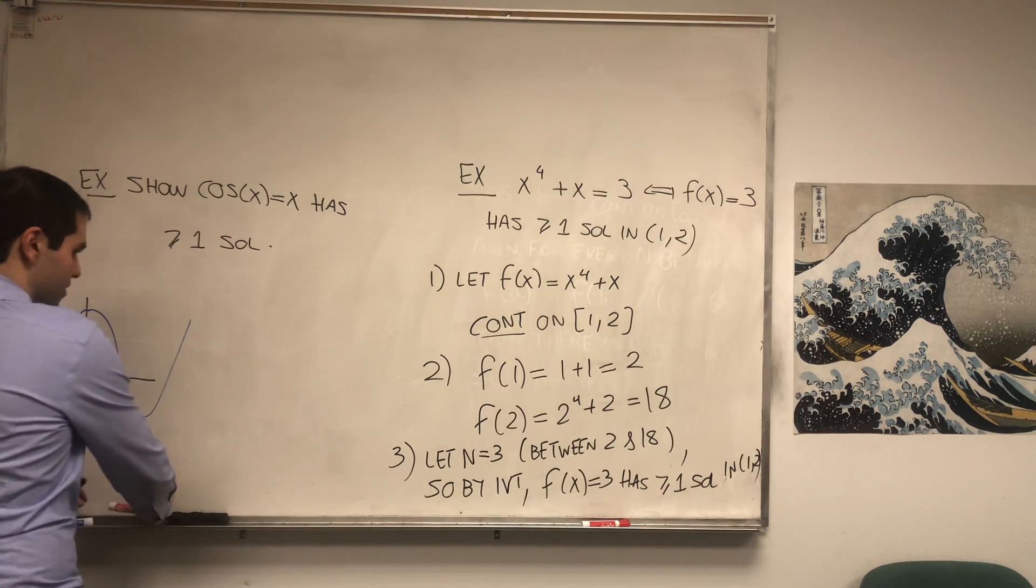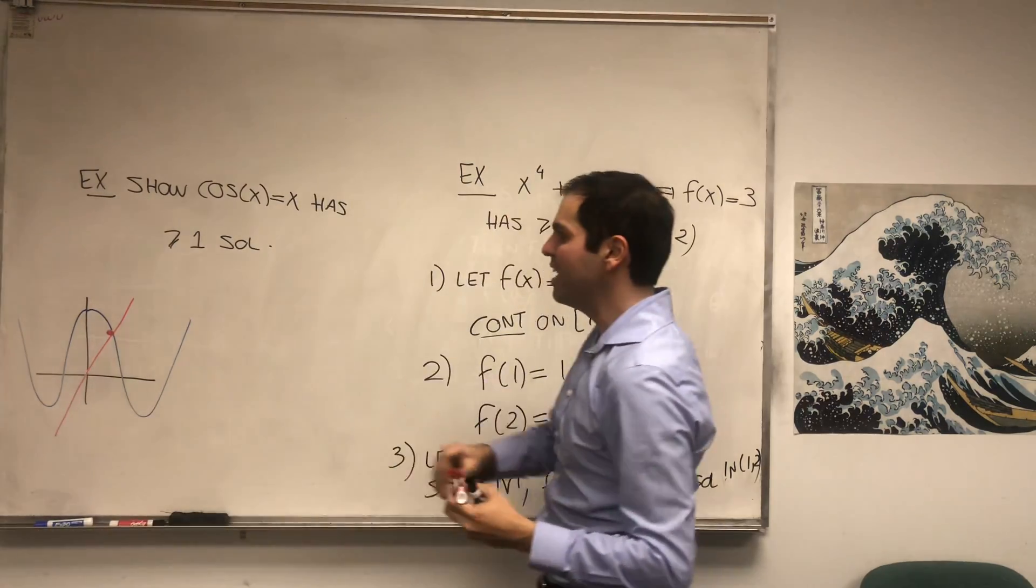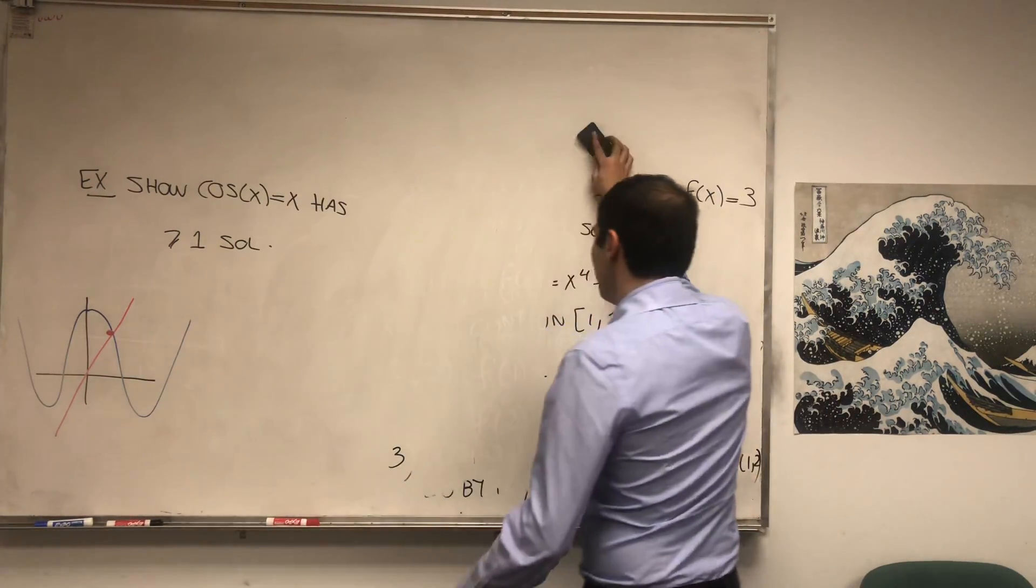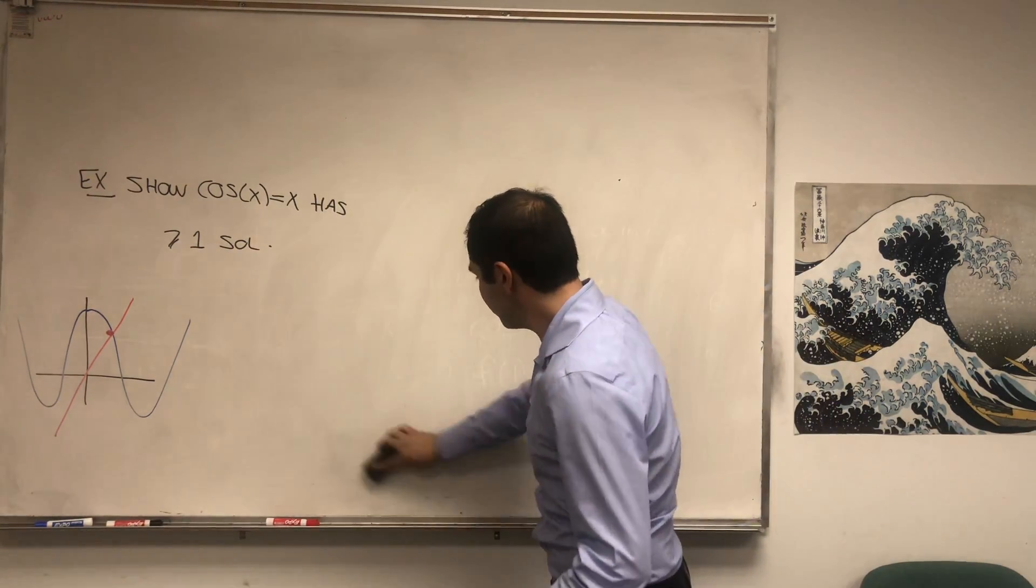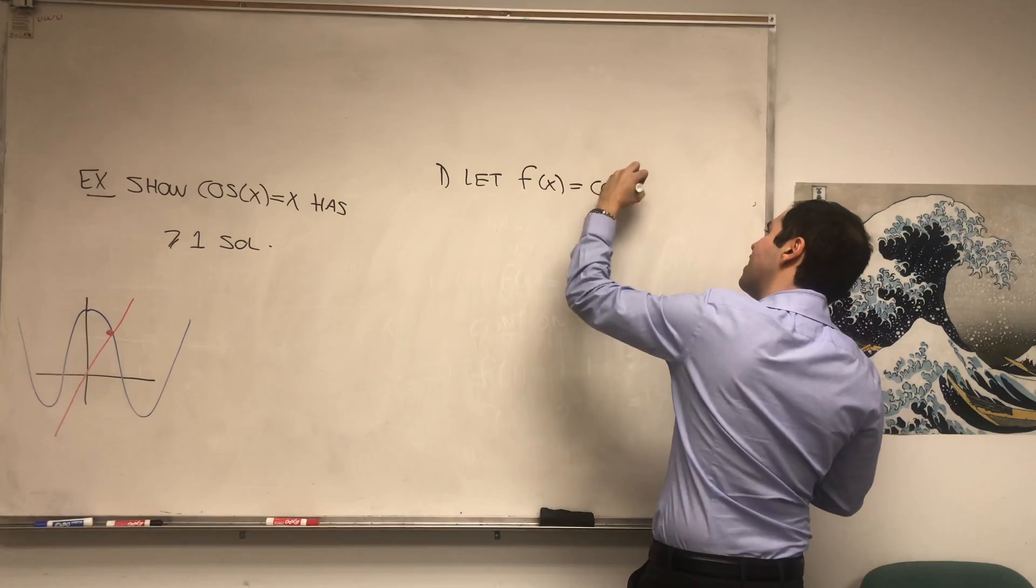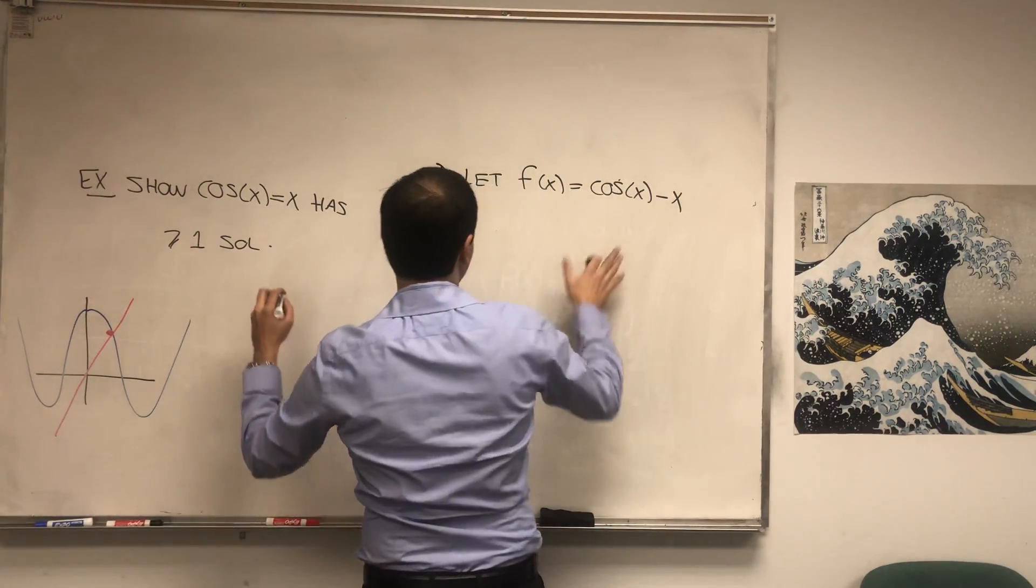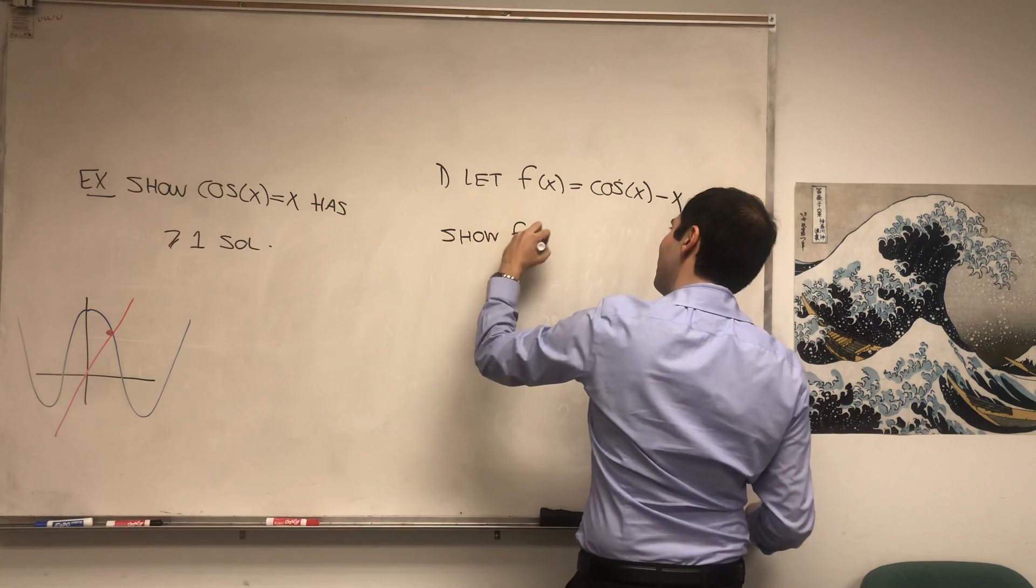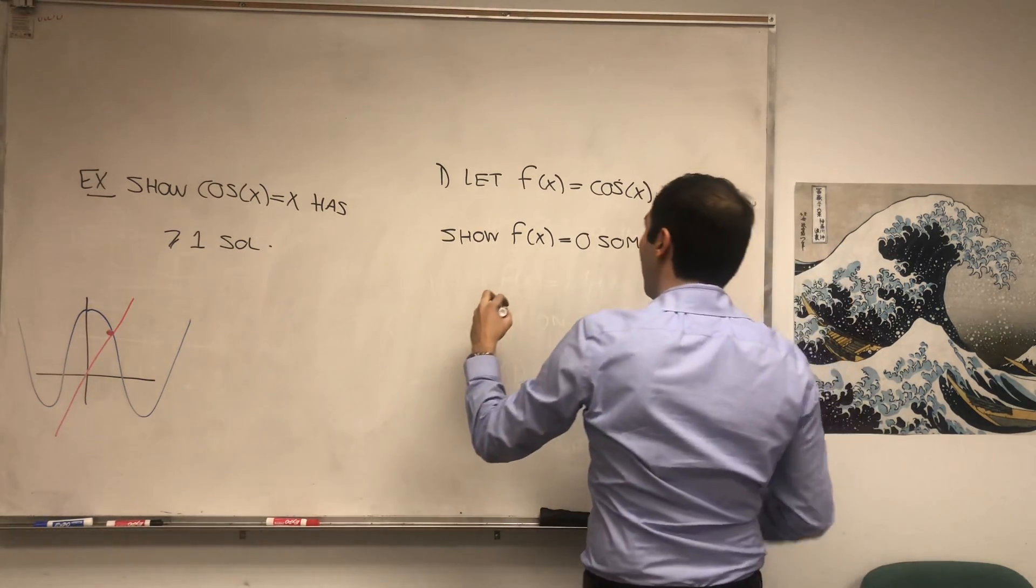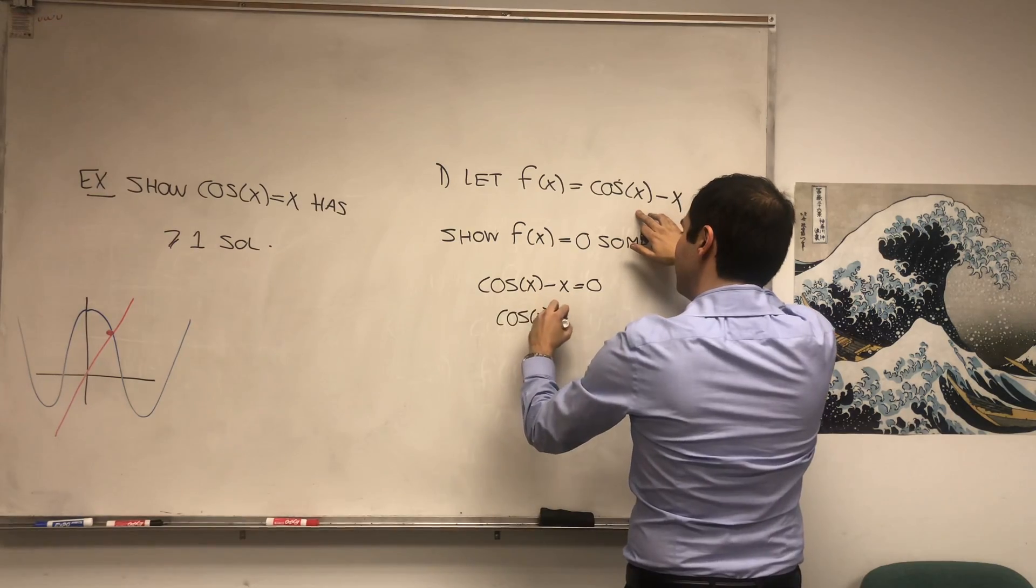This is x, so y equals x. And what we want to show is that cosine intersects that line at least once. And the question is, how do we deal with those two-variable equations? Well, the best thing is just to subtract them. So let f(x) be cos(x) - x. And what we want to show is that f(x) has at least one zero. So show f(x) equals zero somewhere. Why? Because that would mean cos(x) - x equals zero, so cos(x) would be equal to x.